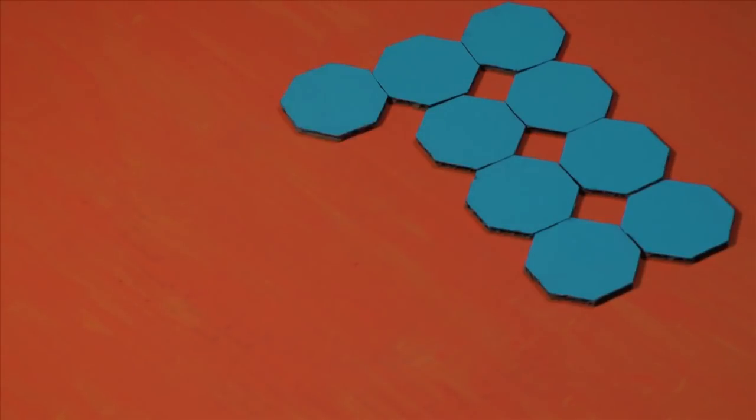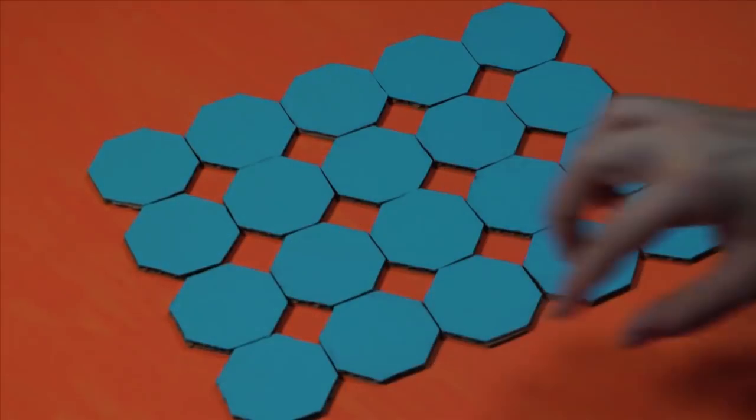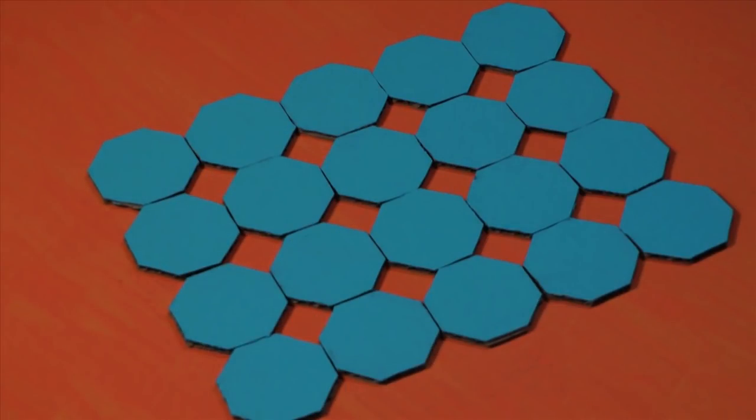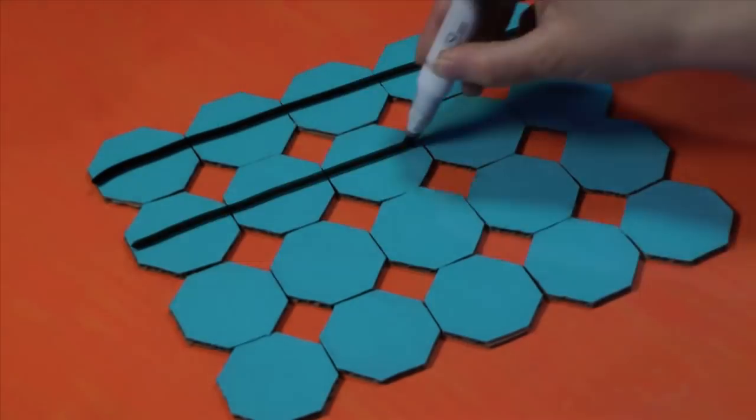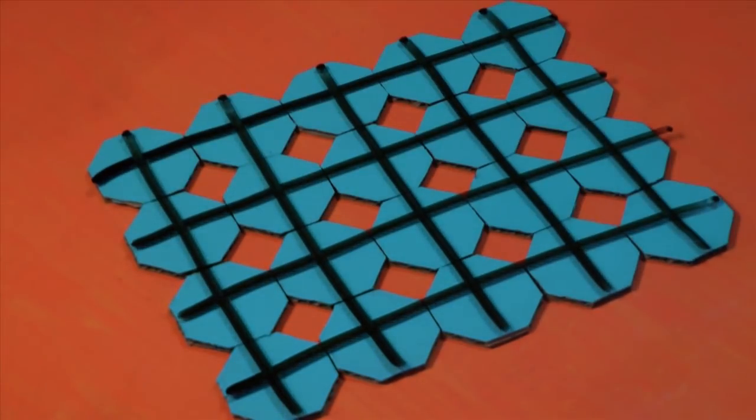Take octagons, for example. Now they have eight sides, and when we put them together, they leave these little square-shaped holes. Those should both be clues, and yeah, when we put them together, they do make a square-shaped grid.